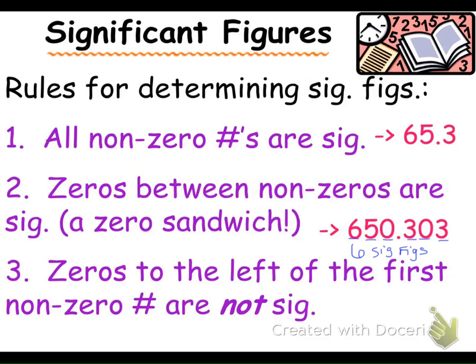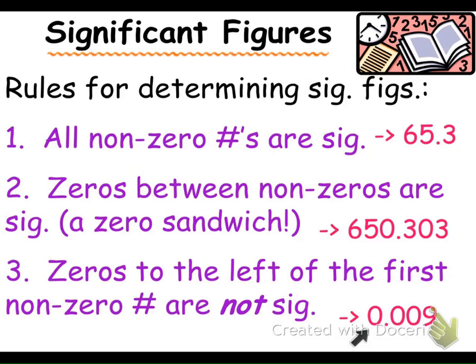Zeros to the left of the first non-zero are not significant. This rule is a little bit confusing, so the biggest thing is you always want to find your first non-zero number, and then identify if it's before or after a decimal. Because it's after a decimal and there are zeros before it, we do not count those zeros as significant. Zeros to the left of the first non-zero are not significant, so those first three zeros do not count.